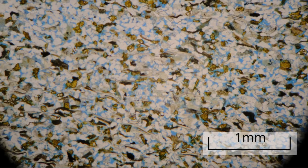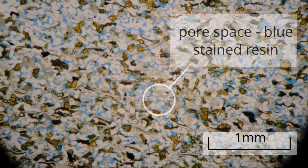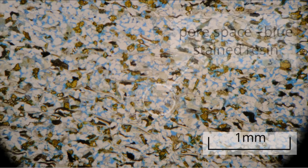In this thin section, the pore spaces have been vacuum impregnated with blue stained resin so that they are easily recognised in plain polarised light.